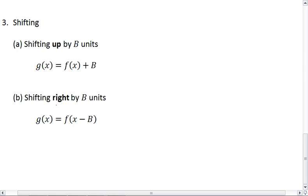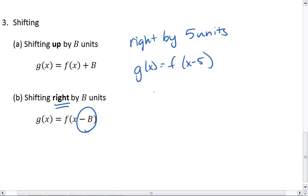Let's say we want to shift right. Then we need to subtract that value. So let's shift right by 5 units. Then our new function will be f of x minus 5, which is x minus 5 plus 3, x minus 5 minus 1, x minus 5 minus 4.